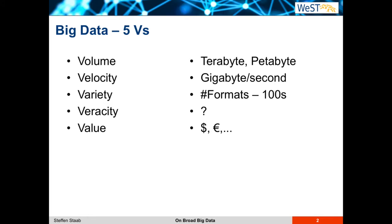Big data is characterized by the five Vs. Volume, measured in terabytes or petabytes that you have to manage. Velocity, a huge amount of data arriving in a very short time span, maybe some gigabytes of data per second. Variety, so your data might include dozens or even hundreds of formats, whether that would be PDFs or images or raw CSV data. Veracity — not sure how to measure that — but ultimately you want to derive value from all this volume, velocity, variety and veracity, which you could measure in dollars or euros.